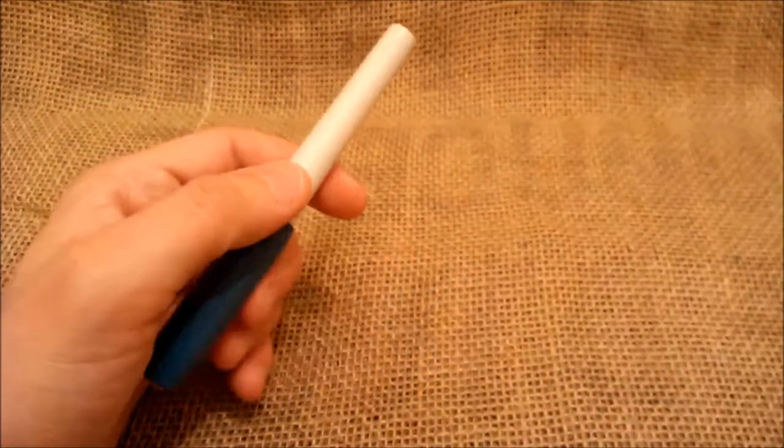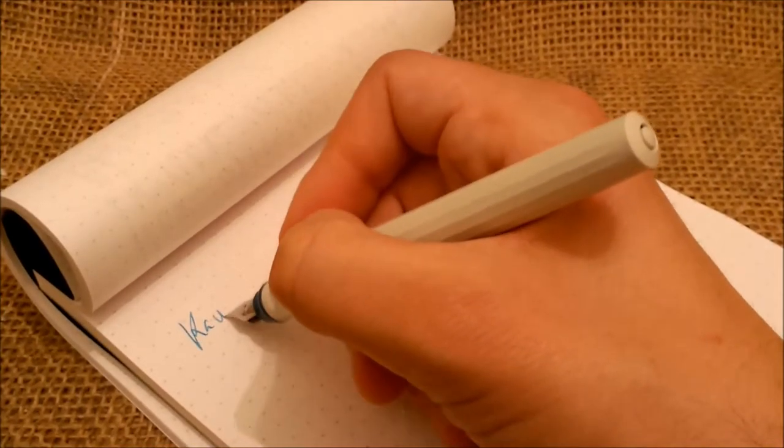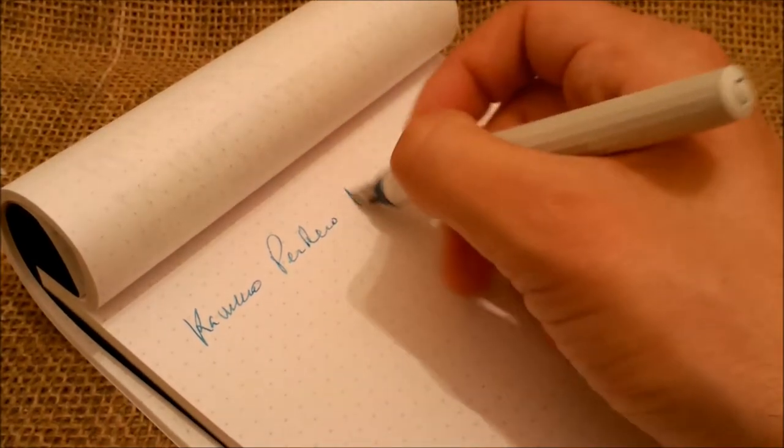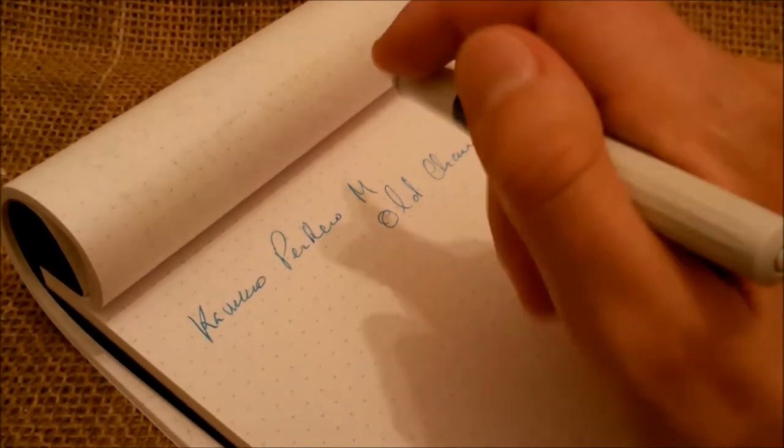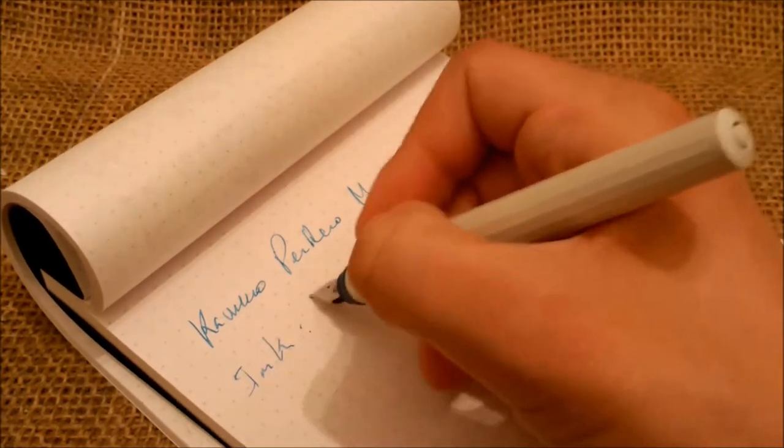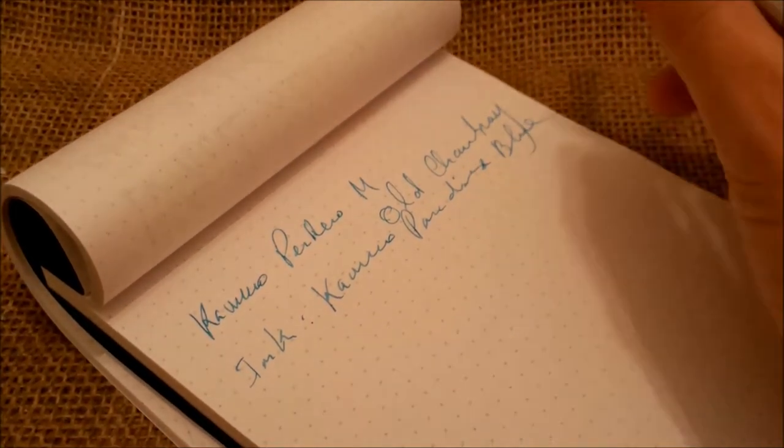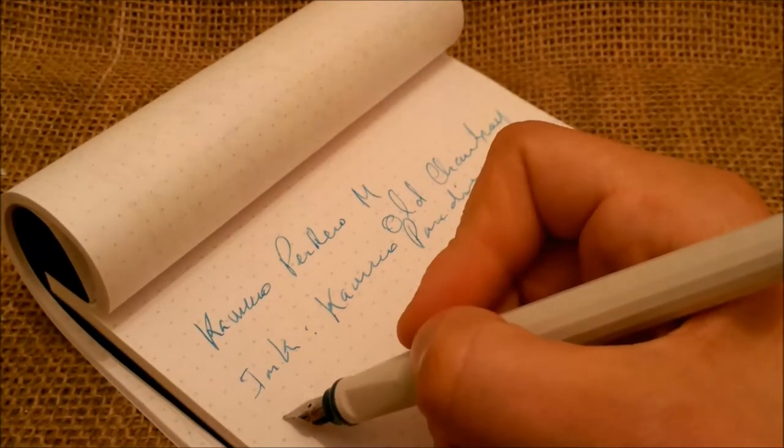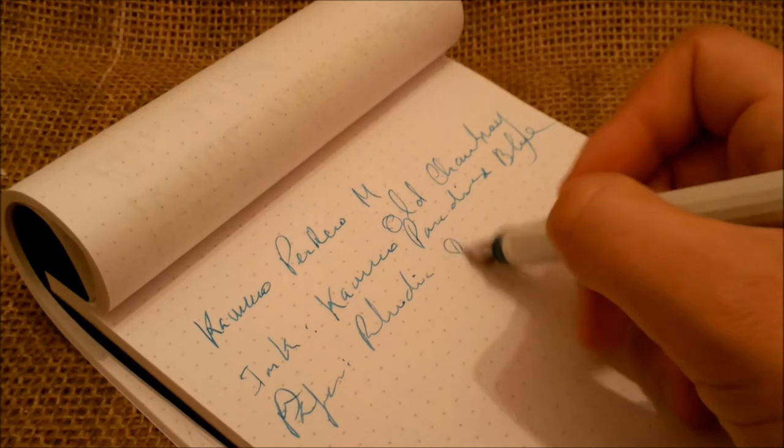So let's just see how it writes. Let's make just a short writing test. The pen is the Caveco Perkeu with an M nib. This version is the Old Chambray. There are other three color schemes for this pen. The ink is the Caveco Paradise Blue and the paper is the Rhodia dot pad.